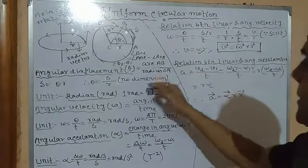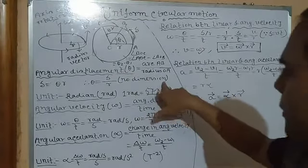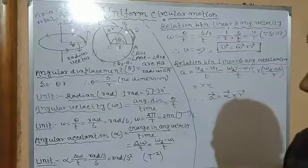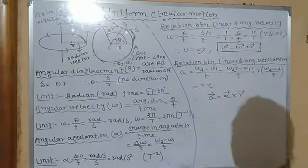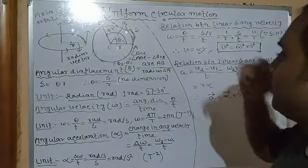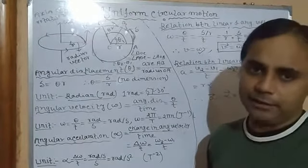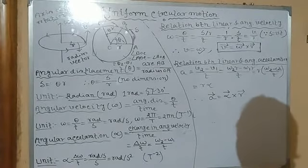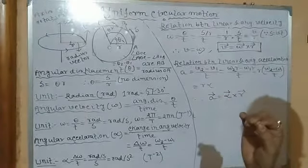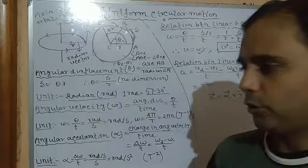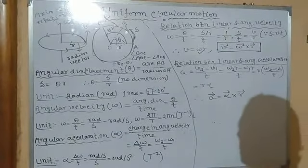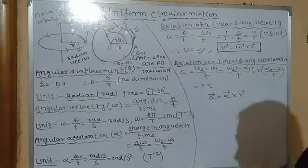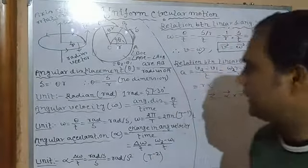Since this is a ratio of the same quantity — length by length — angular displacement has no dimension. When both the arc and the radius are of the same length, the angle is called one radian. So one radian is the unit of angular displacement — it is the angle subtended by an arc of a circle having the same length as the radius. One radian equals 57.30 degrees when measured.